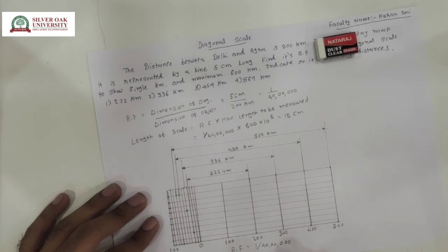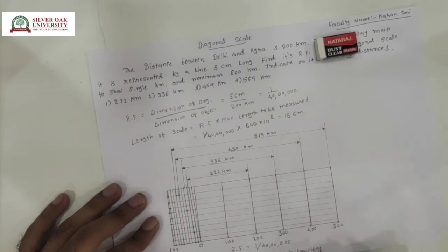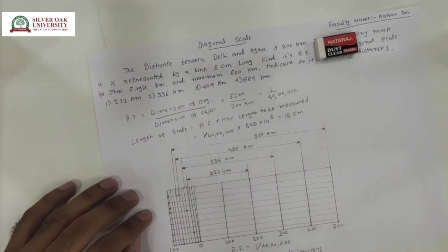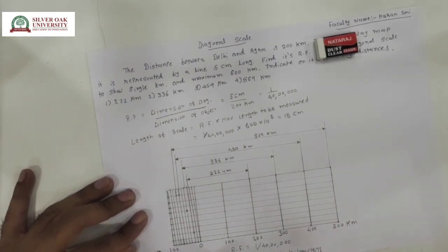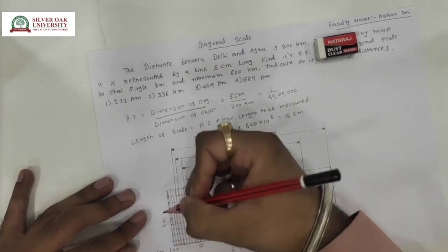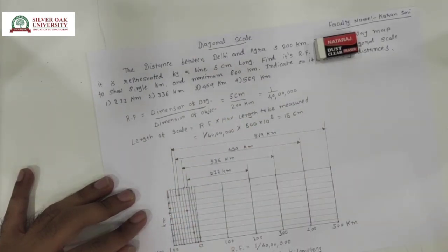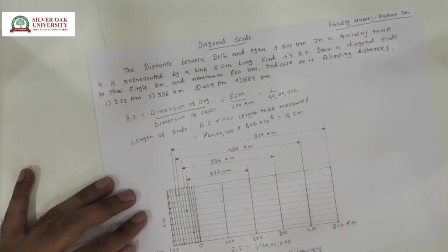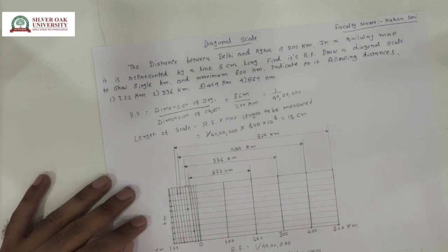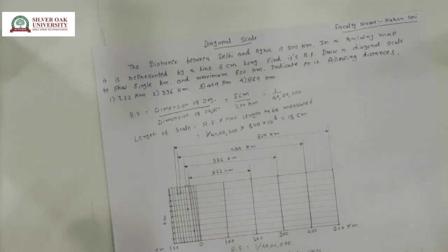This diagonal scale is showing kilometers. In this type of example for the diagonal scale, we can see that kilometers are shown on three scales: the main horizontal scale, the second scale, and the third vertical scale — so we write kilometers in all three scales. This is how these types of examples are solved for the diagonal scale. I hope this concludes the explanation here.